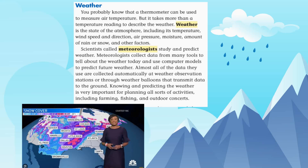Scientists called meteorologists study and predict weather. Meteorologists collect data from many tools to tell about the weather today and use computer models to predict future weather. Almost all of the data they use are collected automatically at weather observation stations or through weather balloons that transmit data to the ground.